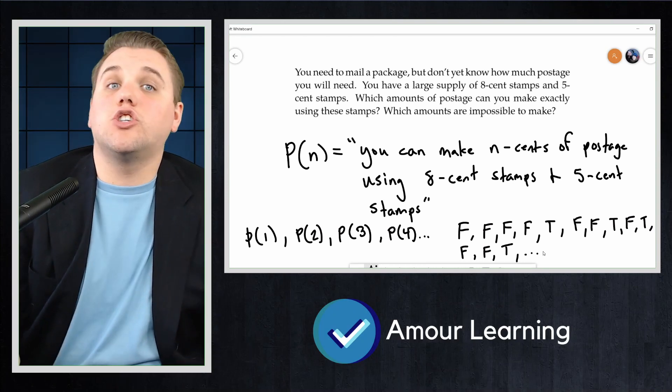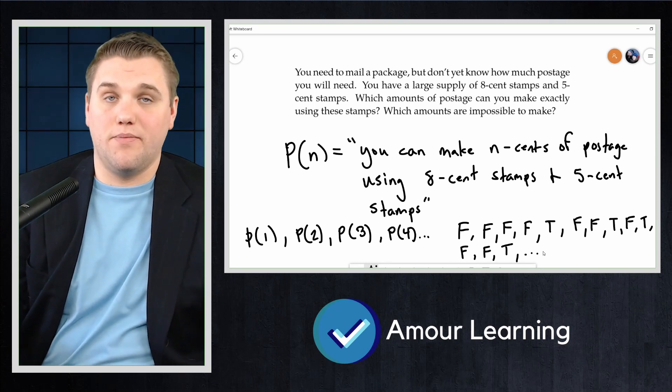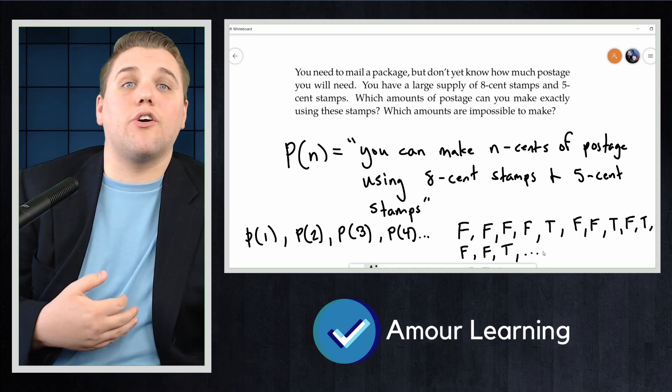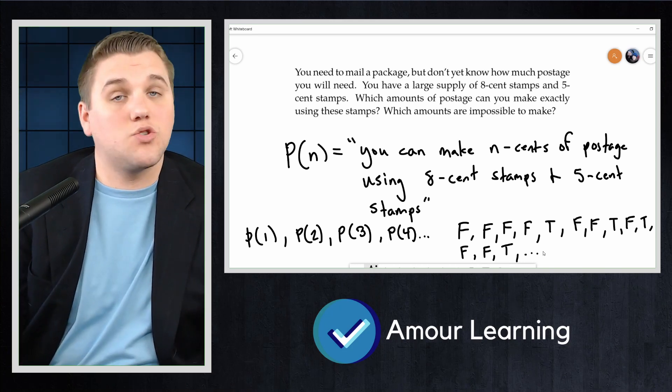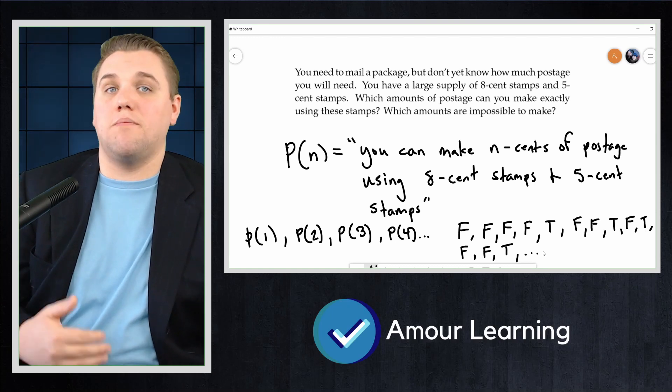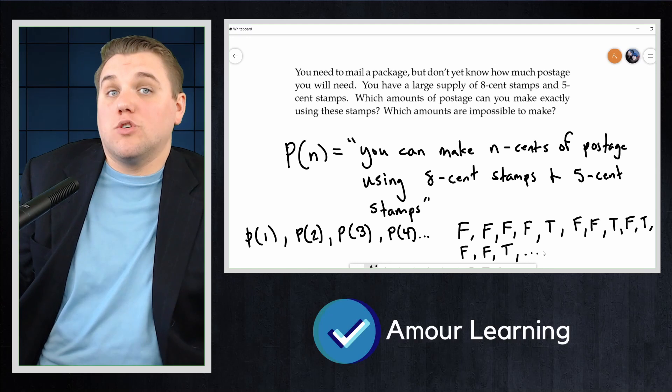for the sequence, so we could use the previous terms of the sequence to compute the nth term. When dealing with sequences of statements, we could use either of these techniques as well. Maybe there's a way to use n itself to determine whether we can make n cents of postage. That would be something like a closed formula.